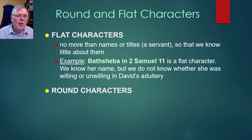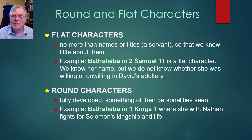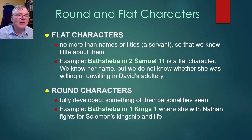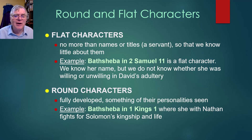A round character, by contrast, is fully developed — we know something of their personalities. In 1 Kings 1, Bathsheba is not a flat character but a round character. That's the story where she, along with Nathan the prophet, plot together to fight for Solomon's kingship and save their lives when Solomon's brother was trying to usurp the throne while David was on his deathbed. There, Bathsheba shows up as a much more round character.